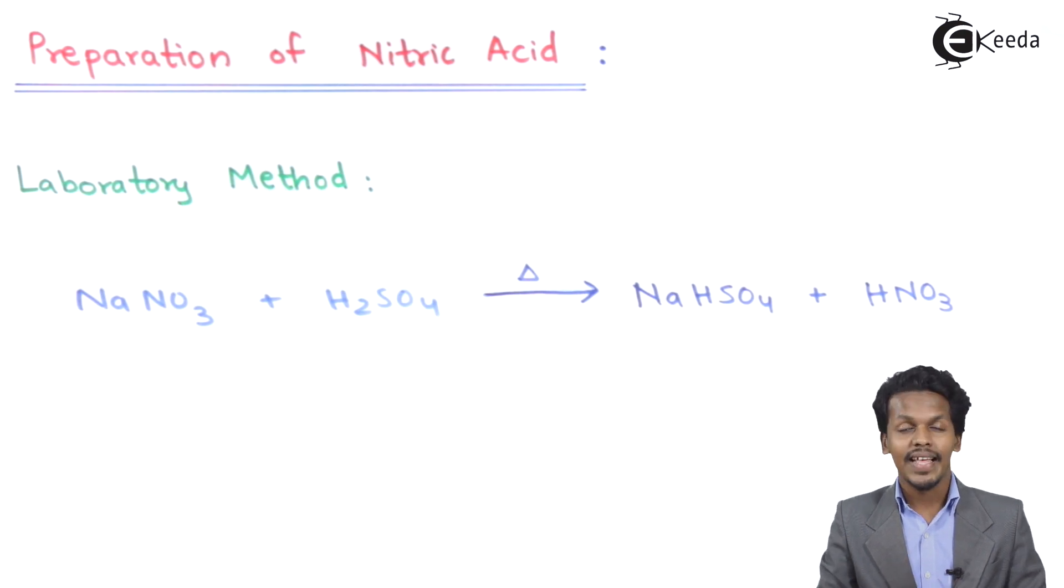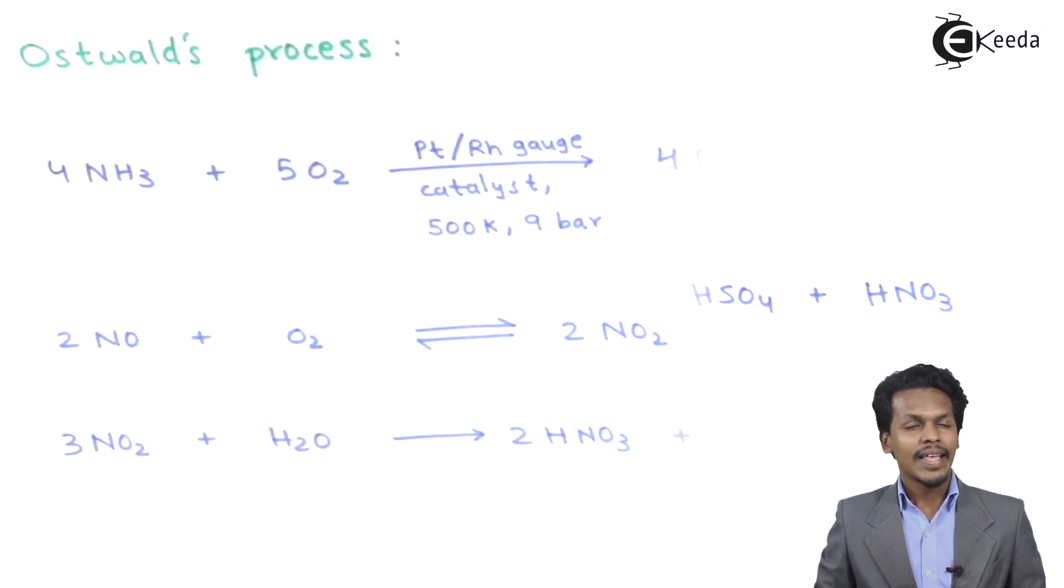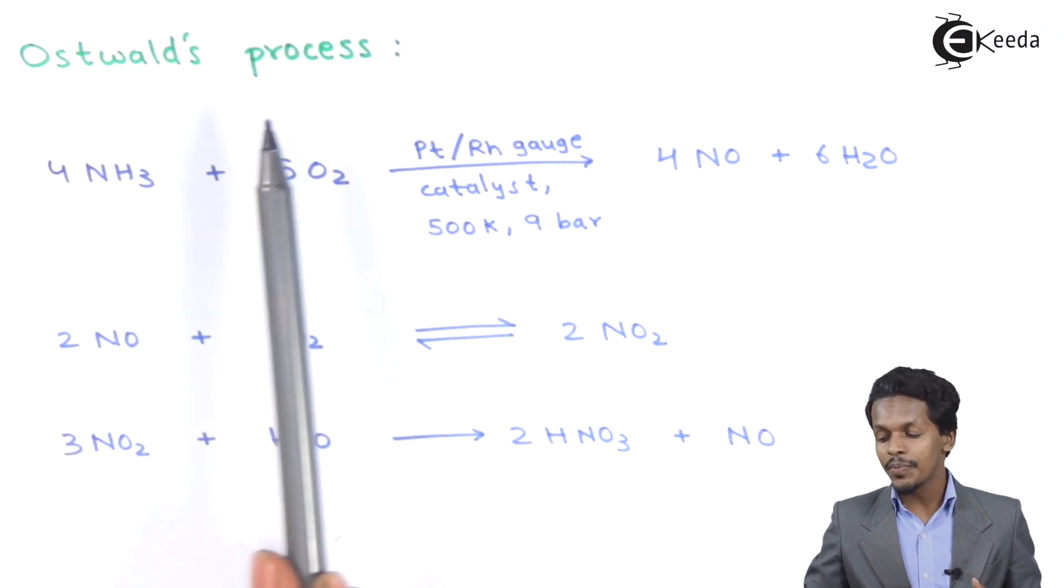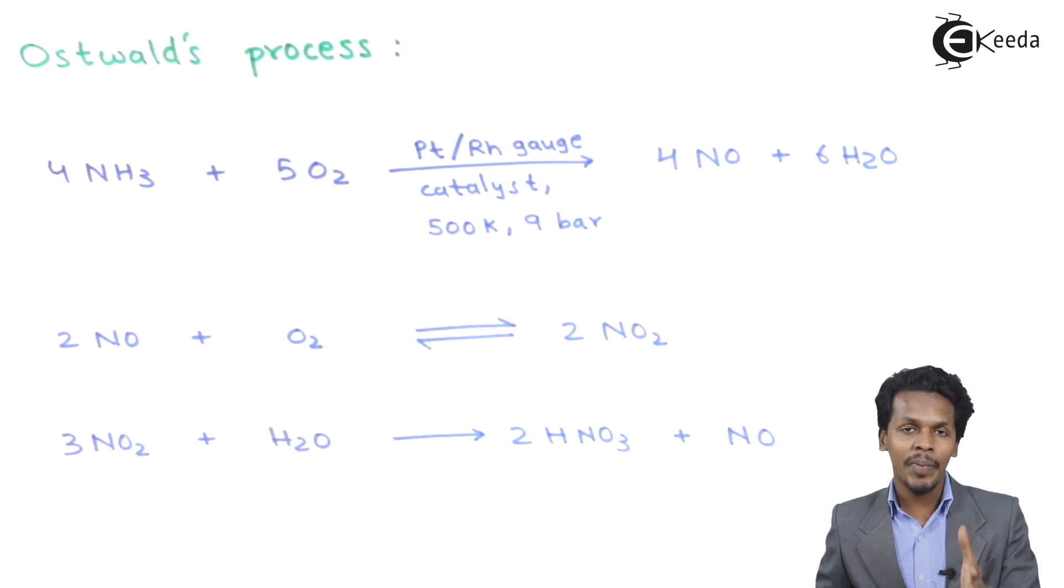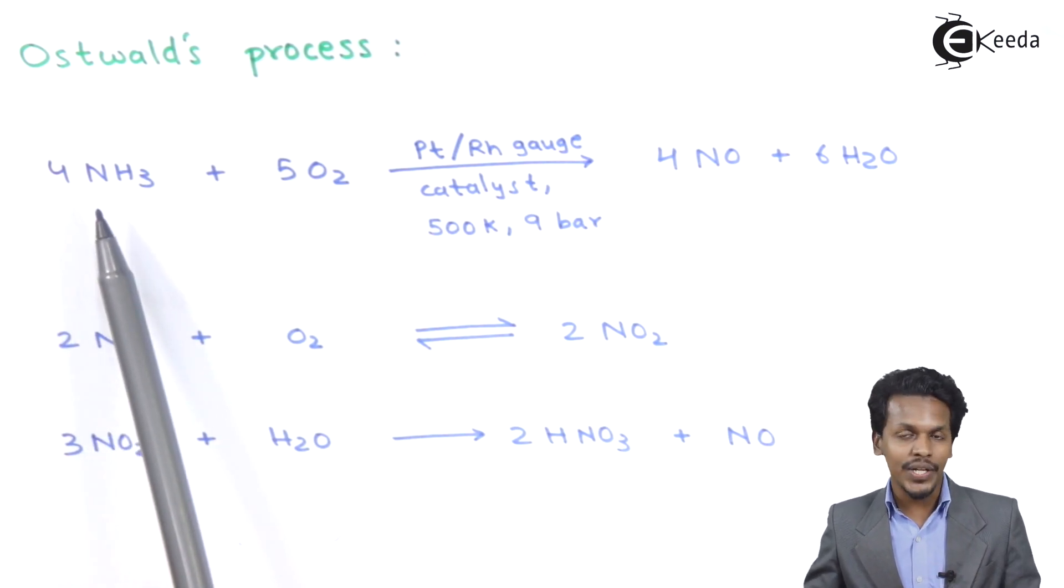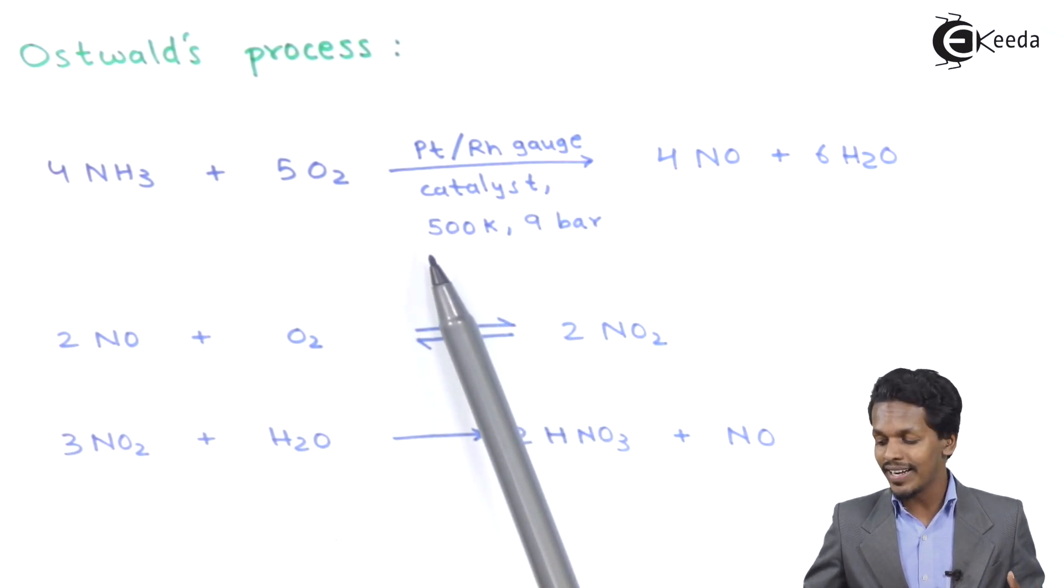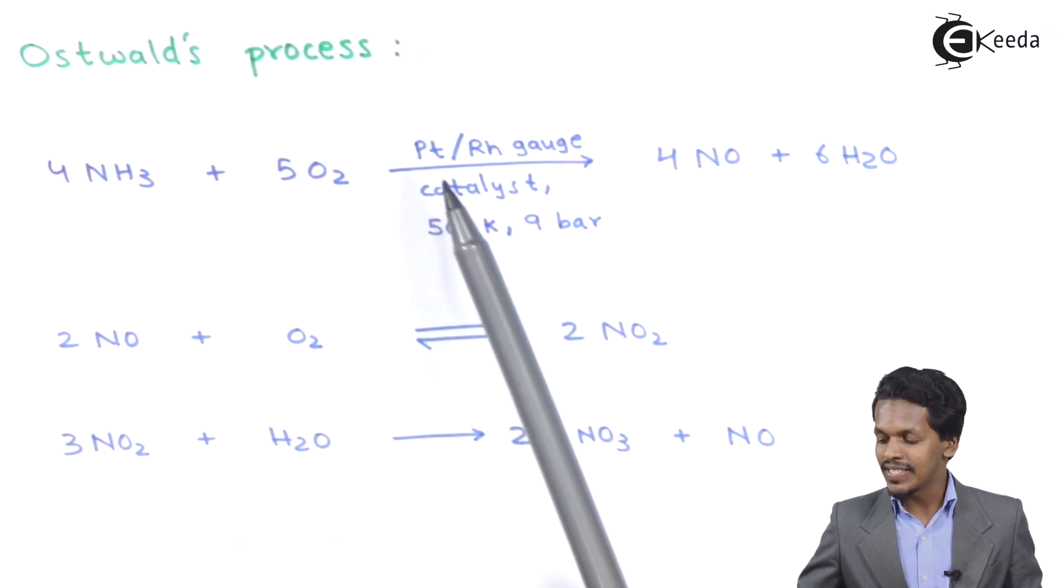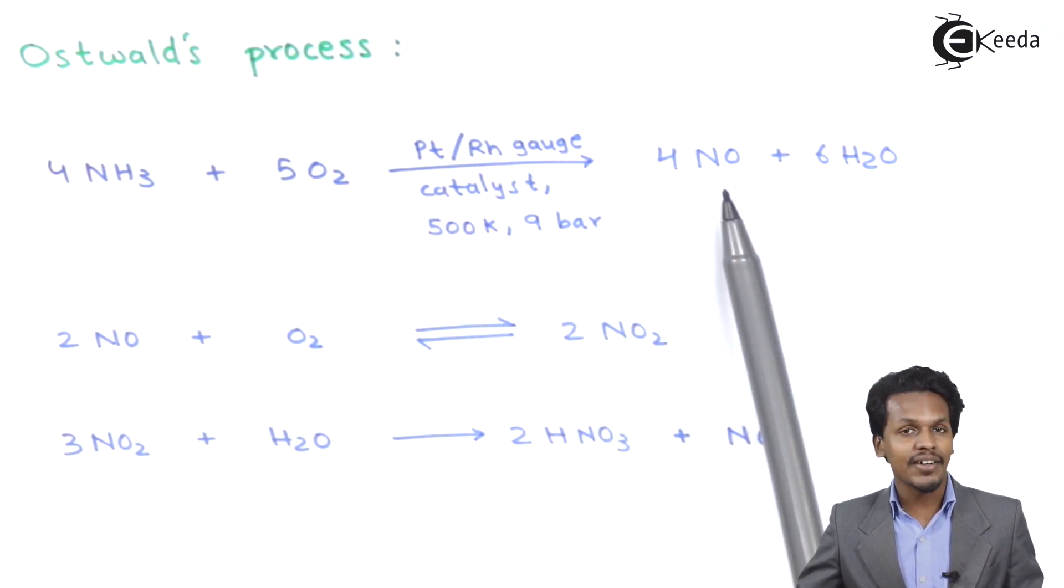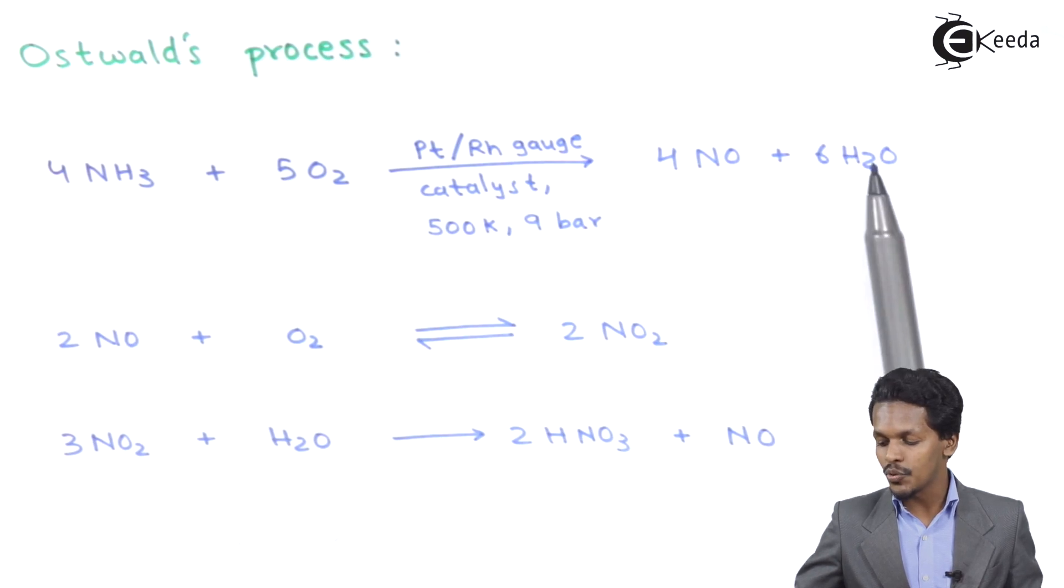Now let me talk about the preparation of nitric acid in large scale. This is the Ostwald process. Talking about the reaction, we consider ammonia in presence of platinum catalyst, and the temperature we provide is 500 Kelvin with a pressure of 9 bar. The product we obtain is 4 moles of nitric oxide along with 6 moles of H2O.